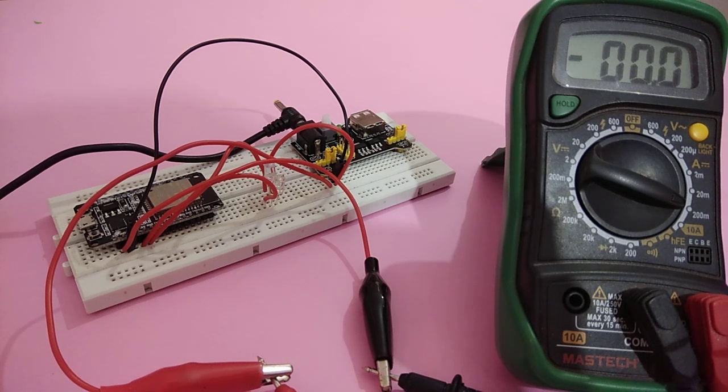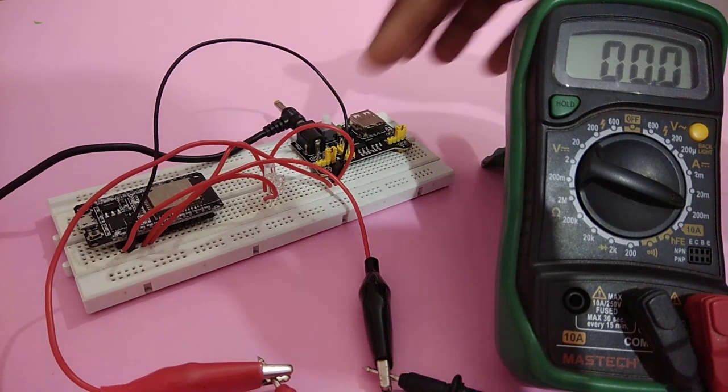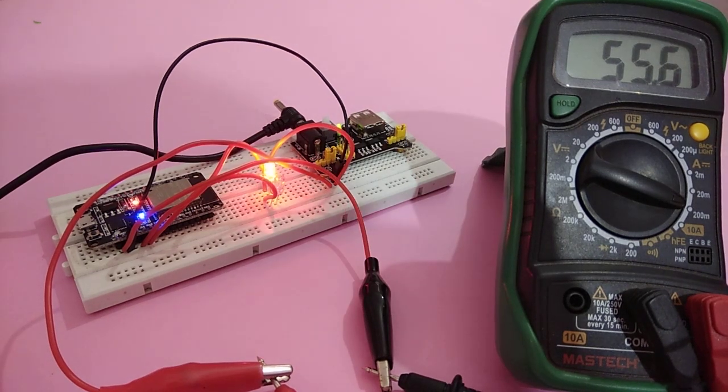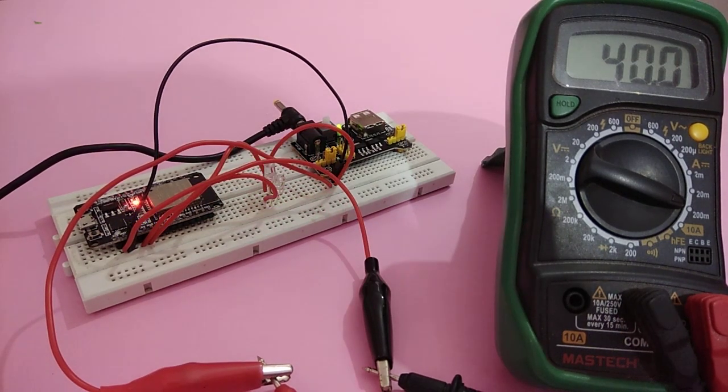So that we can compare the current consumption in both cases. Let us see the demonstration. When I am switching it on, red LED will glow. That means it is the first boot of ESP32. After it, for every restart, green LED will glow.